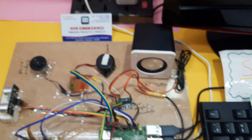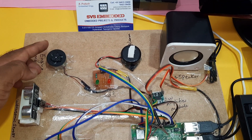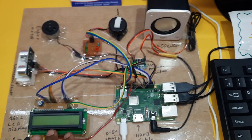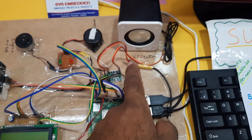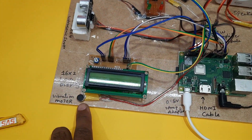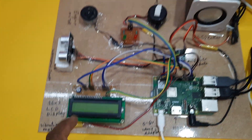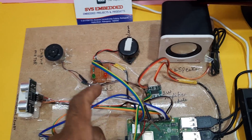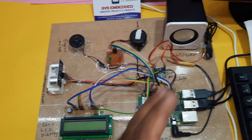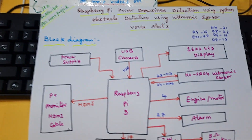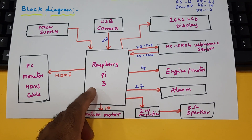This project is an addition to an existing project. The addition is obstacle detection with voice alerts. If driver drowsiness is detected, it will give a voice alert. If the driver is okay, engine is on and LCD display shows 'active.' If the driver is sleeping, vibration motor turns on, engine alarm activates, and it will give the alert 'sleeping, sleeping, sleeping.'